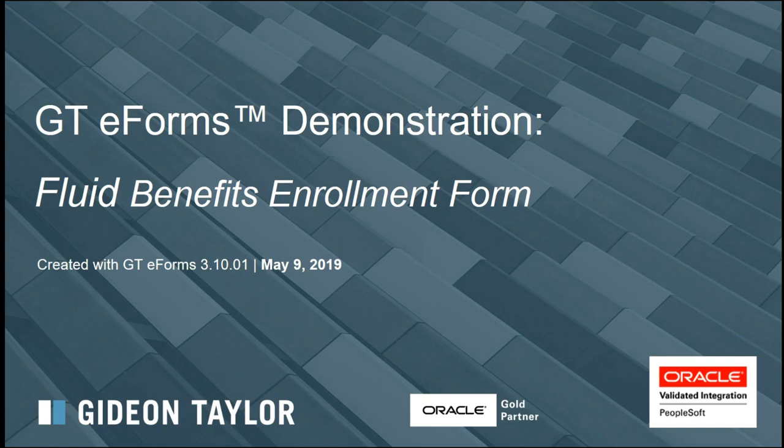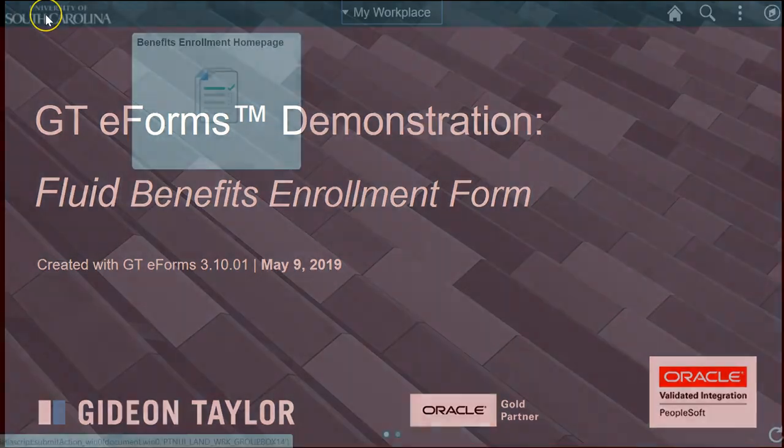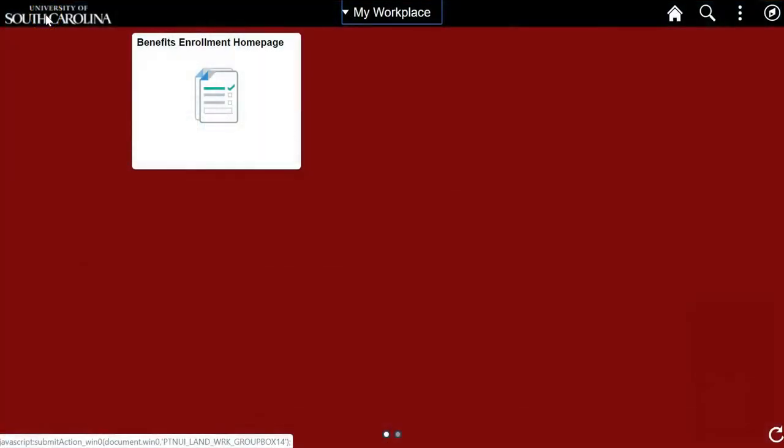When an employee becomes benefits eligible after hire, rehire, or another job action, an automated process creates, pre-populates, and saves a form for the employee. The employer receives an email notification with a link to the form. The employee can also navigate to the form using the Benefits Enrollment tile.